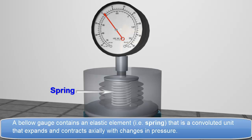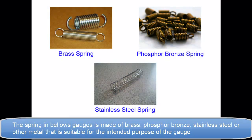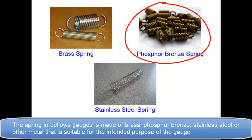that is a convoluted unit that expands and contracts axially with changes in pressure. The spring in Bellow's gauges is made of brass, phosphor bronze, stainless steel or other metal that is suitable for the intended purpose of the gauge.